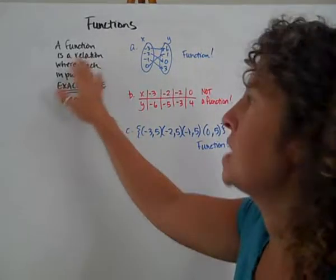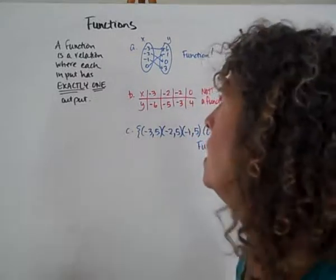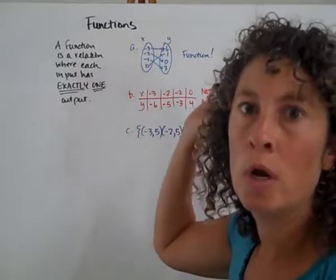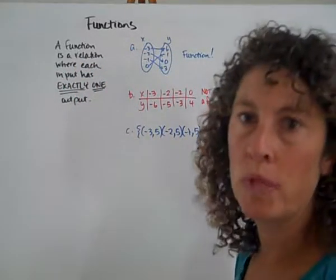Functions. A function is a type of relation, and a relation is two numbers that are connected for some reason. A function is a type of relation where each input has exactly one and only one possible output.